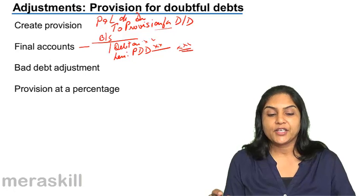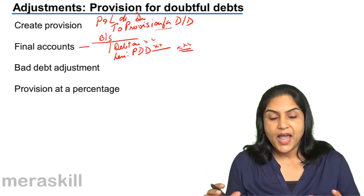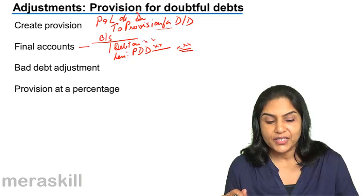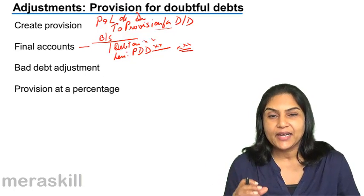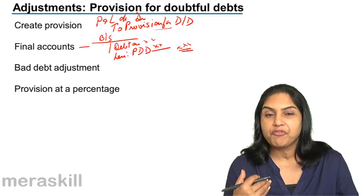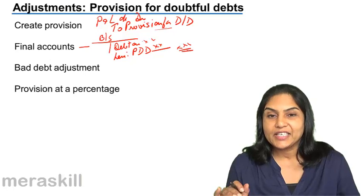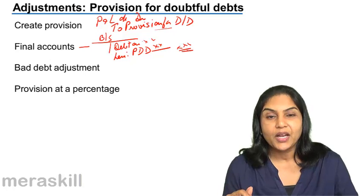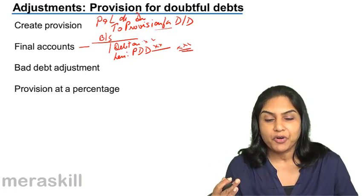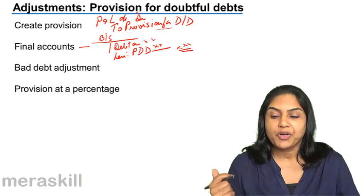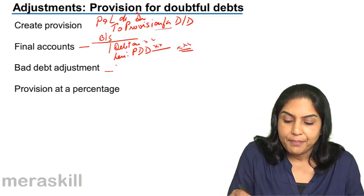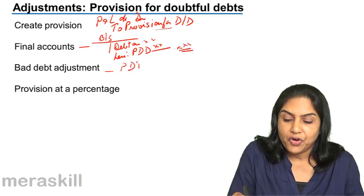It is possible that we create a provision for doubtful debts and also have a bad debt adjustment. In the subsequent year, when a bad debt arises, instead of writing off the bad debt to the profit and loss account, we adjust it with the provision for doubtful debts. The provision will reduce to that extent. If we need further provision, we pass another entry: Profit and Loss Account debit to Provision for Doubtful Debts.